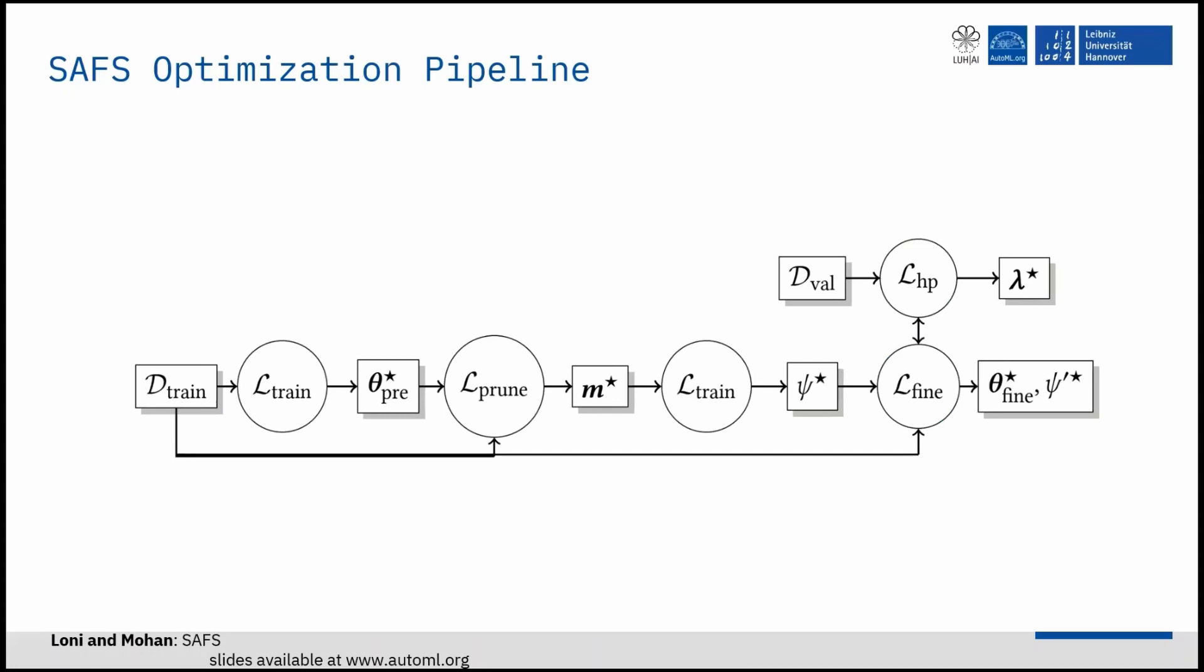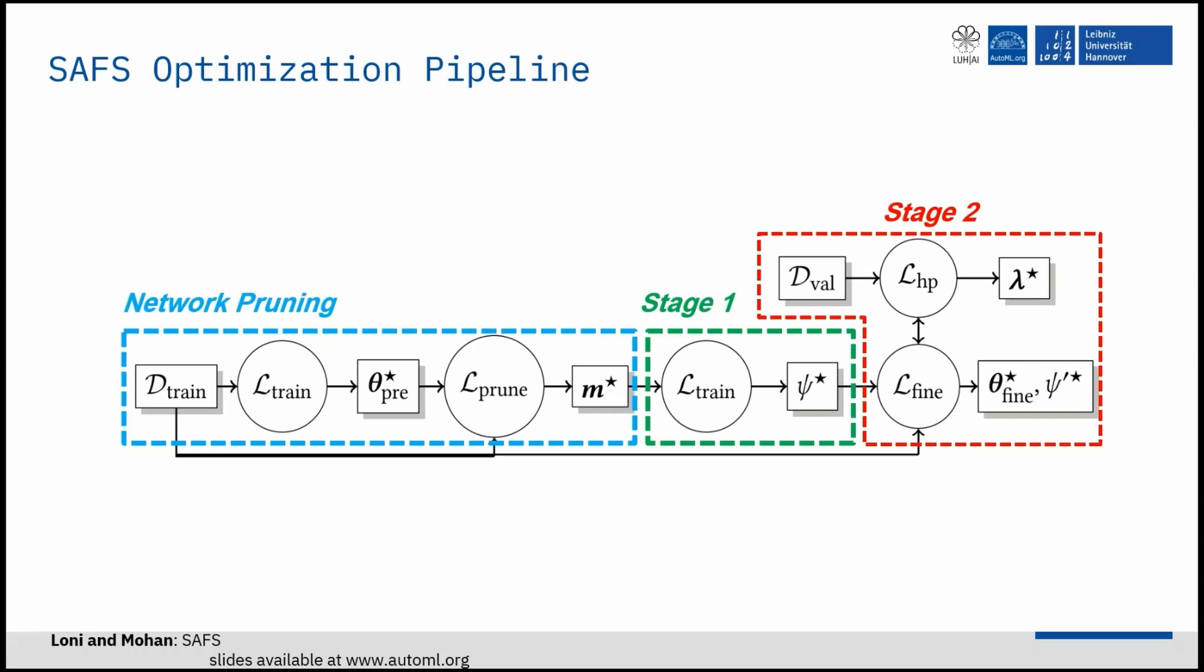Here is the first eye view of the SAFS pipeline. We first prune the network without doing fine-tuning. Then, in the first stage, we search for unary operators for each layer of the network. And finally, we learn hyperparameters jointly with scaling factors and network weight tensors.